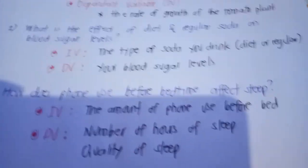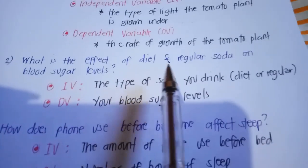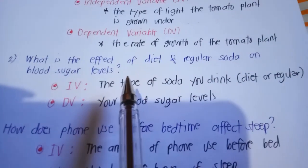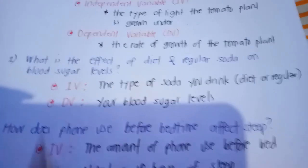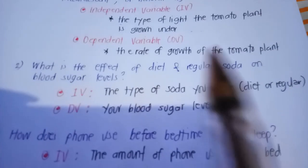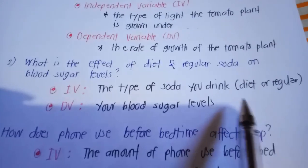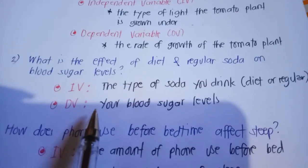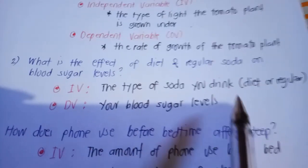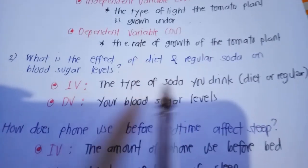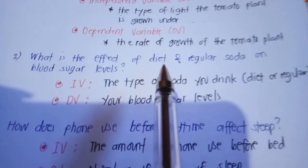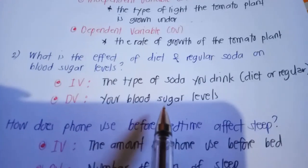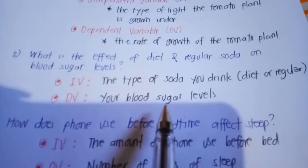Second example: what is the effect of diet and regular soda on blood sugar levels? Our independent variable is the type of soda you drink, either diet or regular. Your dependent variable is the effect on your blood sugar level — is it high or low?